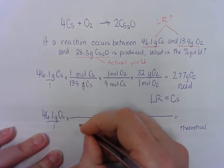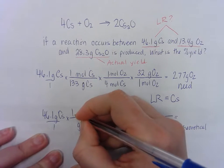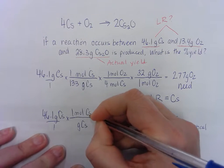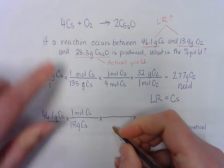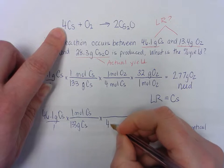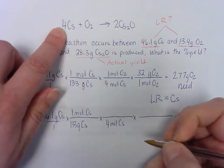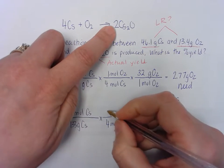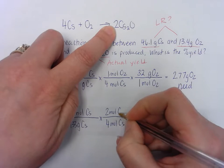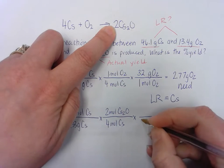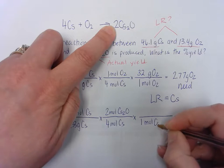All right, so grams of CS on the bottom to cancel. And that's one mole of CS. And up here we had 133. And I have in my balanced equation four moles of CS. And I'm changing it into the two moles of CS2O.